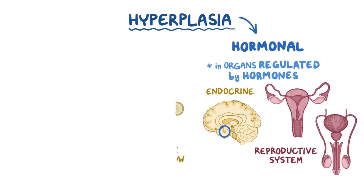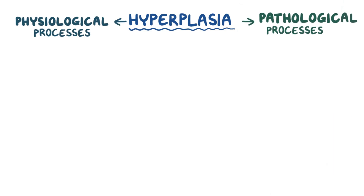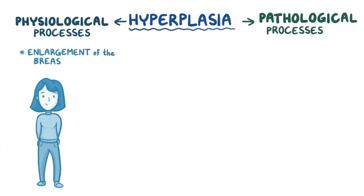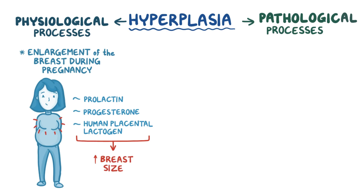Like hypertrophy, hyperplasia can also be physiological or pathological. An example of physiologic hyperplasia is enlargement of the female breast during pregnancy. In preparation for breastfeeding, hormones like prolactin, progesterone, and human placental lactogen stimulate the growth of glandular tissue in the breast and cause them to enlarge.